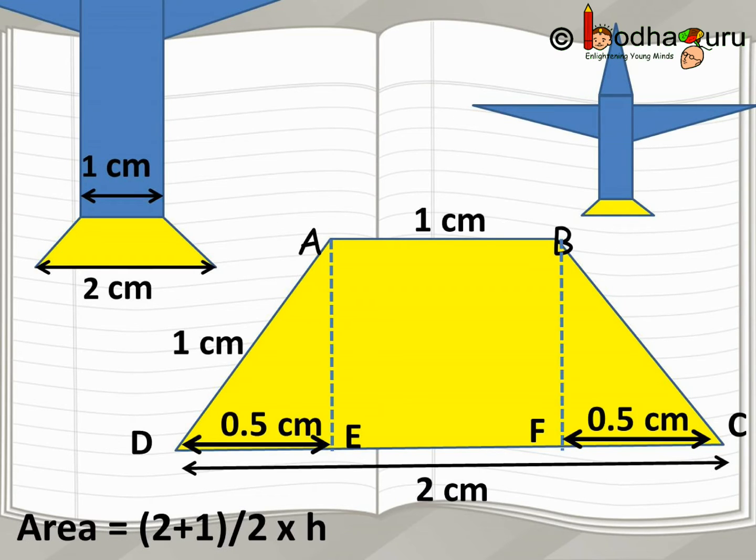AB is equal to 1 cm. CD equal to 2 cm. EF is also equal to 1 cm. So, the difference between CD and EF is 1 cm which means DE and FC together is equal to 1 cm. So, we say each DE and FC are equal to 0.5 cm each.